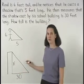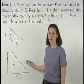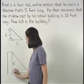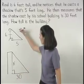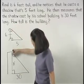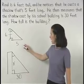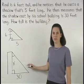Notice that the two triangles that we've drawn are similar because they both have right angles and the shadows are cast at the same angle. So the triangles are similar by the angle-angle similarity postulate.